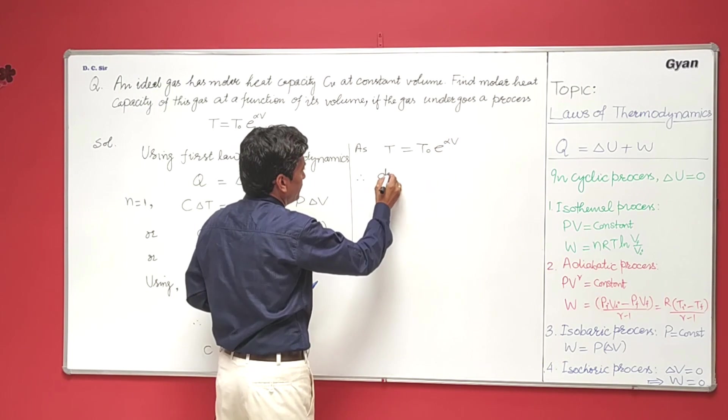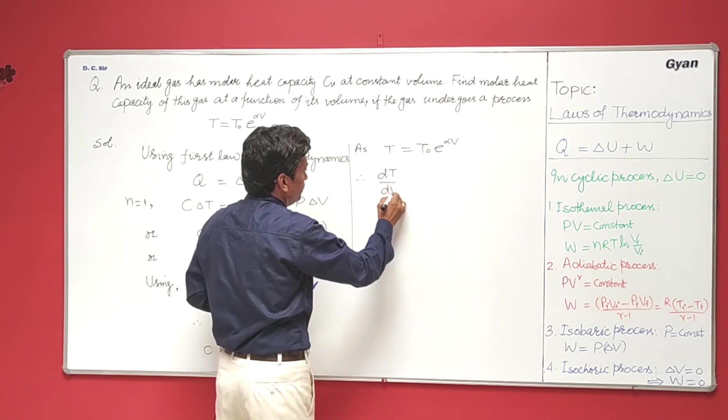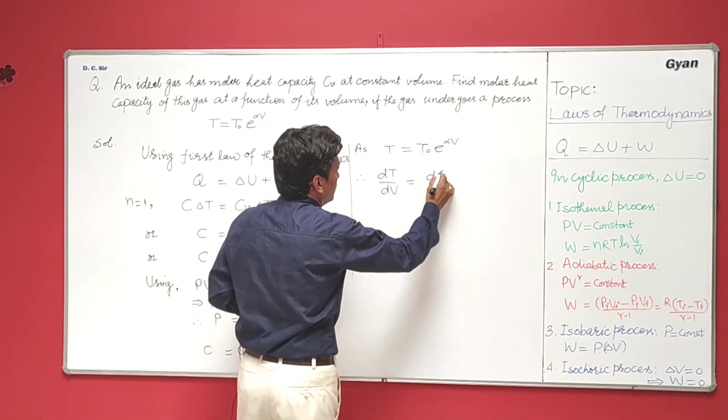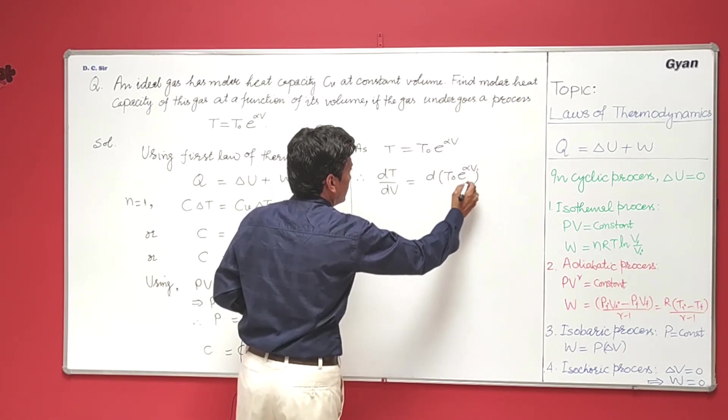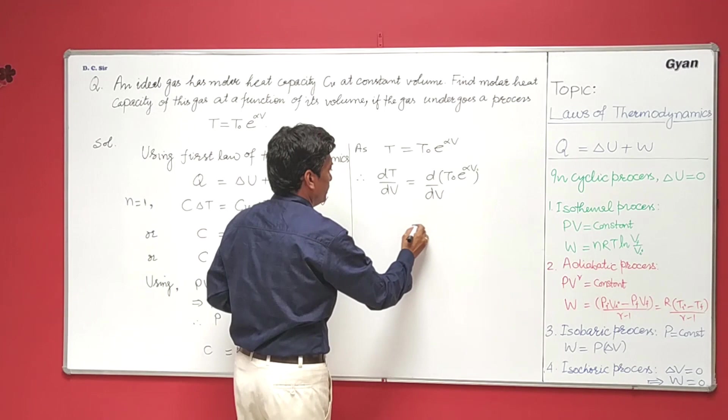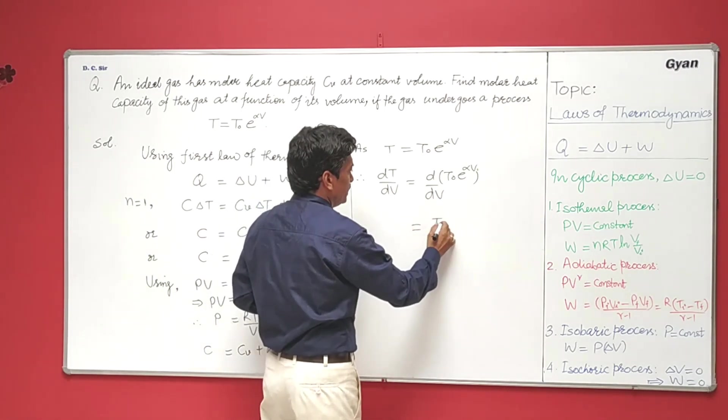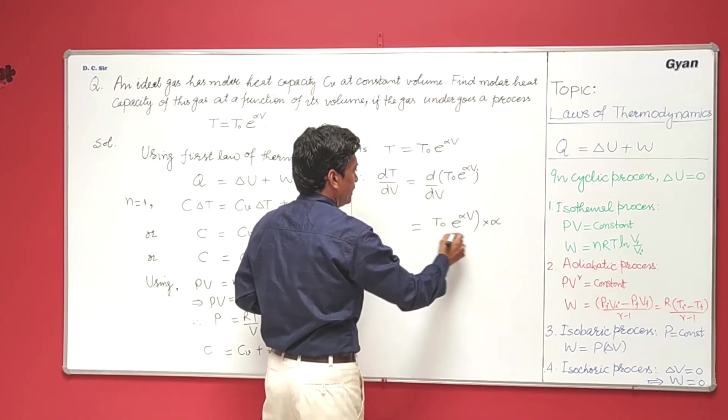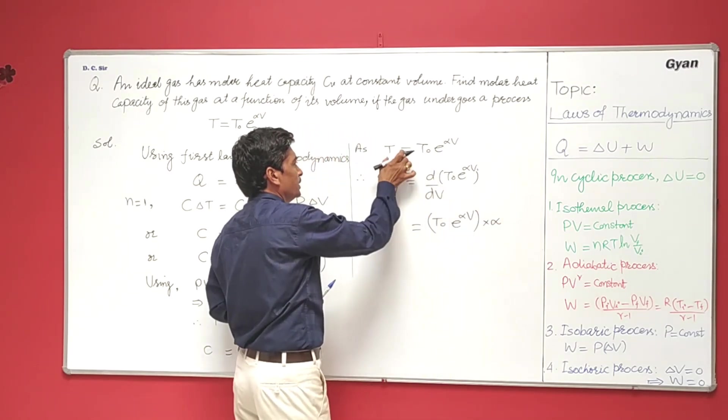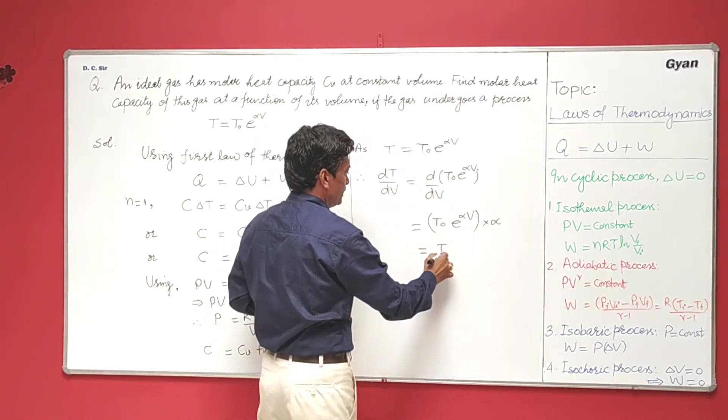So dT over dV equals T₀ e to the power alpha V times alpha. Now this quantity is again T, so we can write this as alpha T.